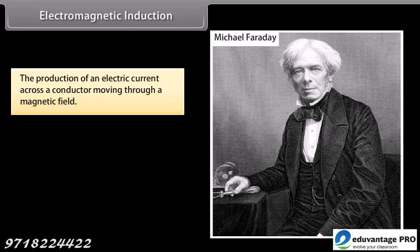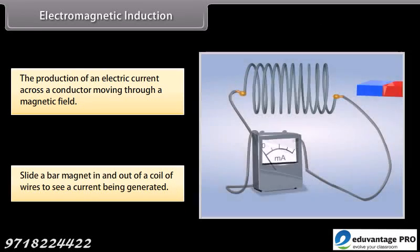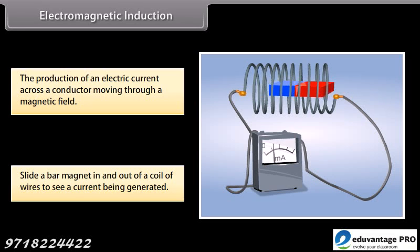His experiments included the discovery of generating currents by moving a magnet. Let us try sliding a bar magnet in and out of a coil of wires. You see that the wires generate a current. This is known as electromagnetic induction.